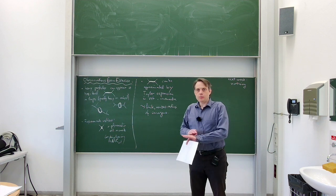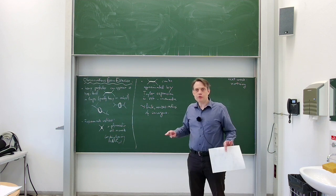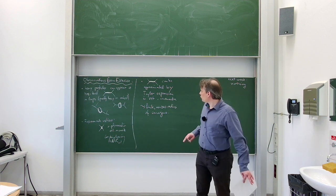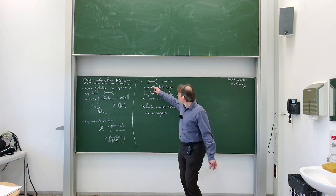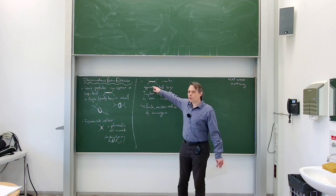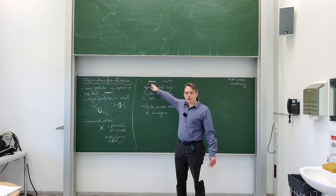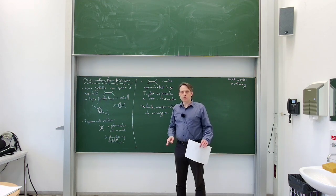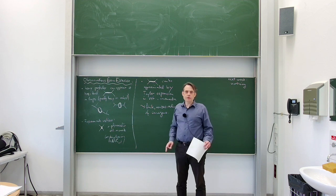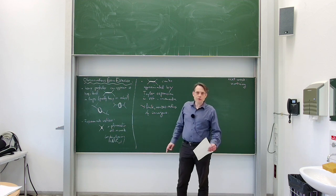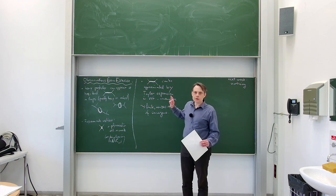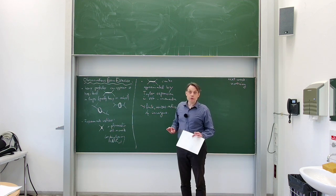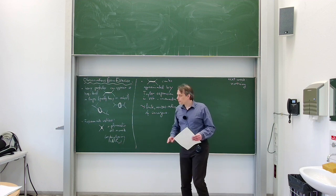The opposite kind of expansion — where momenta are large and the mass is small — also exists and can have a finite radius of convergence, possibly described by particular EFTs. However, in the majority of this lecture we will focus on the case where the mass is heavy and the energies are small. The opposite expansion is also of interest and we may cover it later in the semester.